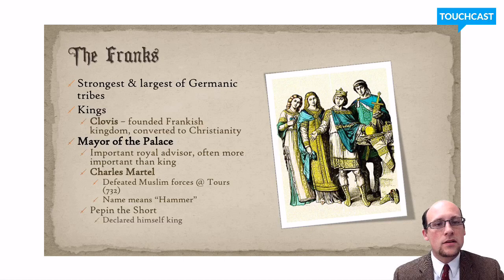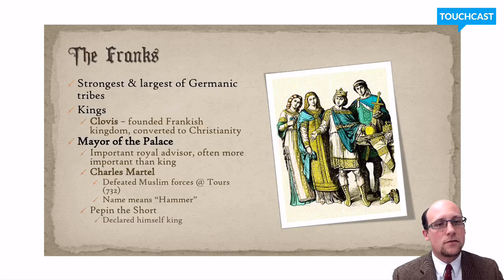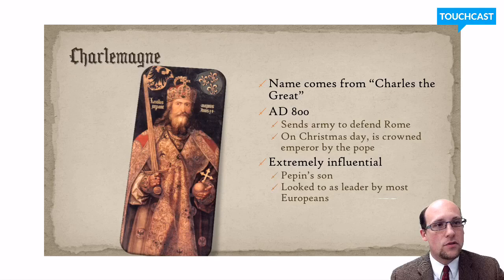Then there was another mayor of the palace named Pepin the Short. By the time Pepin was mayor, the kings were very weak and pretty much everybody in Europe knew it. Pepin actually wrote a letter to the pope asking if he could kick the king out and make himself king. The pope implied that nobody would miss the king, so soon the king was removed, Pepin appointed himself the new king, and started a new dynasty. His son Charles succeeded him — Pepin only ruled a short time, hence the name 'the Short.'